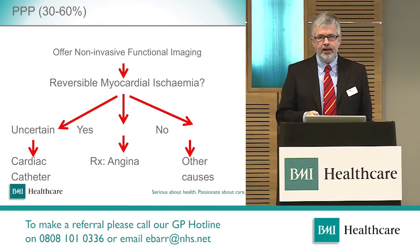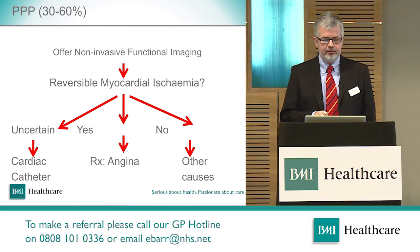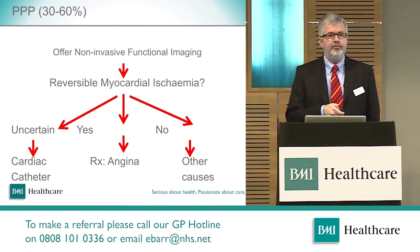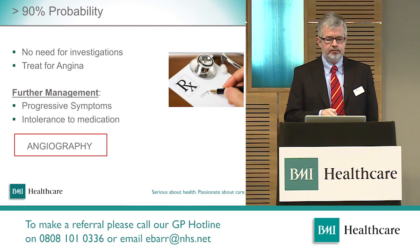For 30–60% probability of disease, you want to consider functional imaging and stress echo and CT. Between 60–90% pre-test probability, that's when we do invasive angiograms.